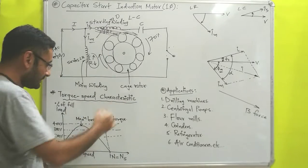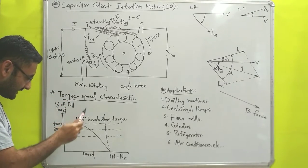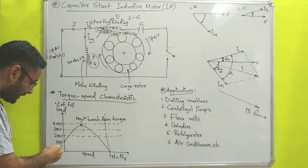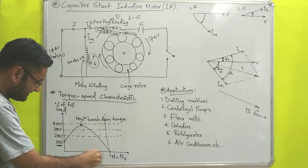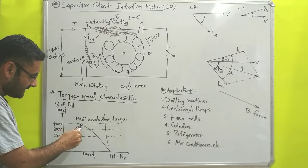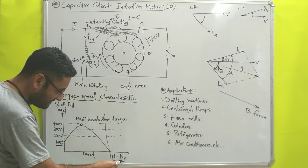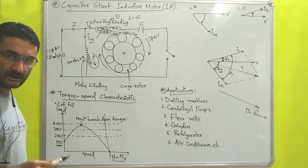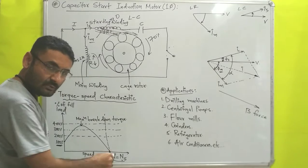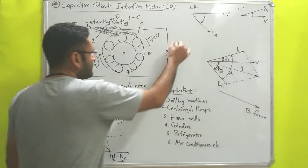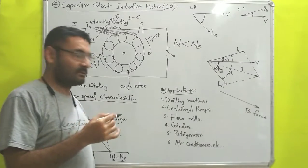Now for the torque-speed characteristics: the horizontal axis represents speed and the vertical axis represents the percentage of full load torque. To start this motor, you need to supply 100% of the maximum load torque. As speed increases, torque also increases up to its maximum breakdown torque, after which torque decreases and becomes zero when synchronous speed equals the actual rotor speed. Generally, the actual rotor speed is less than the synchronous speed.